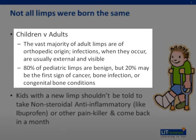One thinks differently about limp in children versus in adults. Adults usually present with an orthopedic injury and typically can tell you how they stepped off the curb funny or twisted their knee. Children, however, 20% of the time, the limp is the first sign of cancer, a serious bone infection, or congenital bone condition. It's important to take these limps seriously and to evaluate them appropriately so as not to miss an important or dangerous cause.